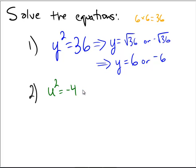In the second case, let's look at u squared equals negative 4. This would imply that u could either be the square root of negative 4, or possibly the opposite of the square root of negative 4.